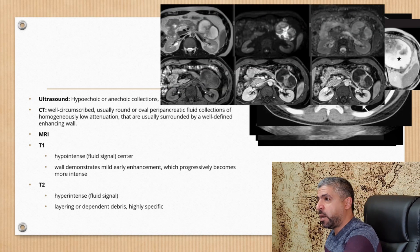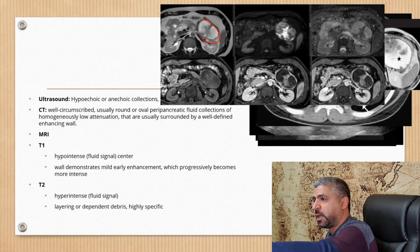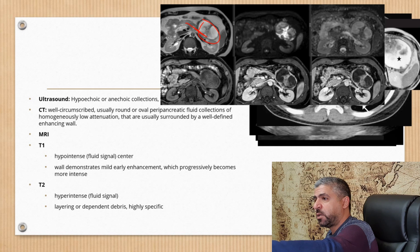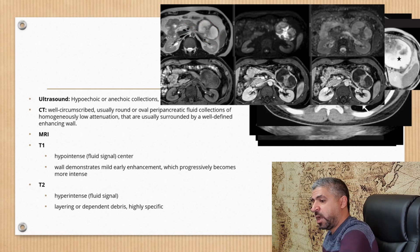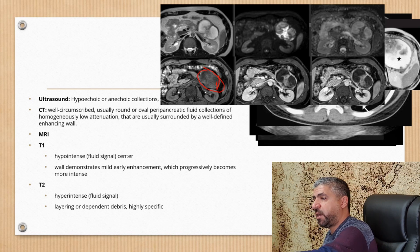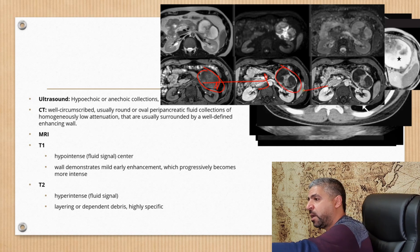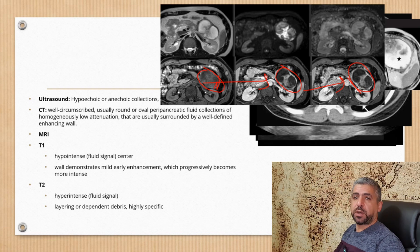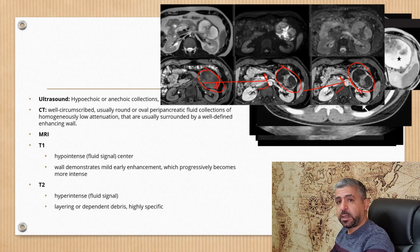On MRI, you can see a large cystic lesion with a thick wall containing internal debris, highly suggestive of pancreatic pseudocyst. Another example shows a cystic lesion with a thick wall just anterior to the tail of the pancreas, demonstrating fluid signal intensity on T2-weighted images and fluid signal intensity with a relatively thick wall on T1. When contrast is given, it starts enhancing, and a slightly delayed image shows even more post-contrast enhancement — this is in favor of pancreatic pseudocyst.